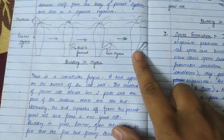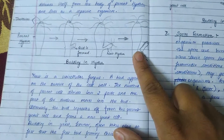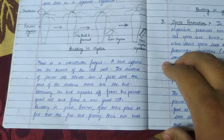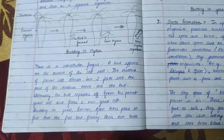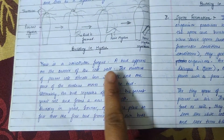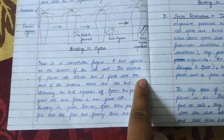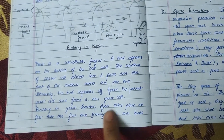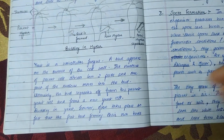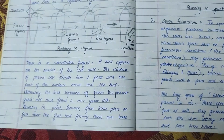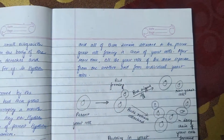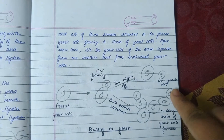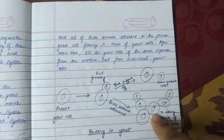Yeast is a unicellular fungus. A bud appears outside the cell wall; the nucleus divides into two parts, and one part moves into the bud. The bud separates from the parent yeast cell, forming a new yeast cell. Budding in yeast often happens so fast that the first bud forms its own buds, remaining attached to the parent cell in a chain. After some time, all the yeast cells in the chain separate into individual yeast cells.